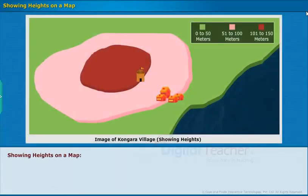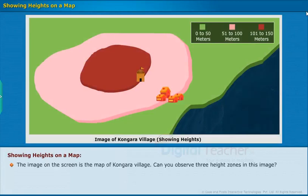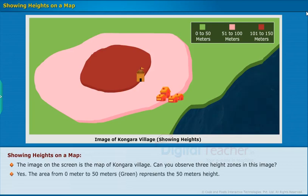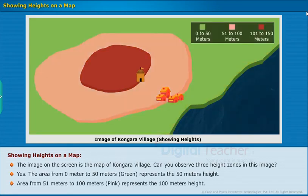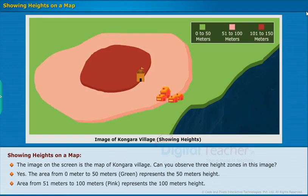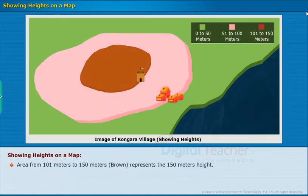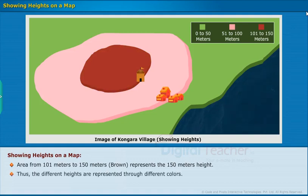Now let us learn about showing heights on a map. The image on the screen is the map of Kongara village. There are three height zones in this image: the area from 0 to 50 meters, shown in green, represents the 50-meter height zone; from 51 to 100 meters, shown in pink, represents the 100-meter height zone; and from 101 to 150 meters, shown in brown, represents the 150-meter height zone. Thus, different heights are represented through different colors.